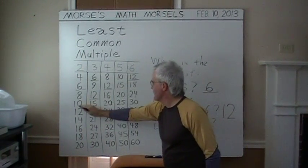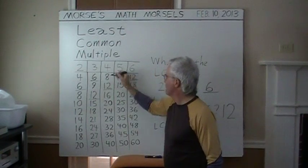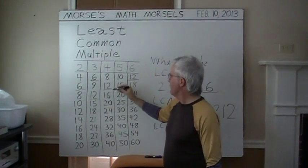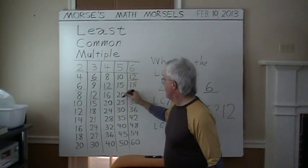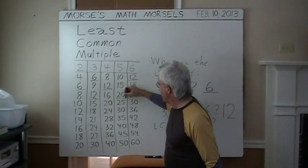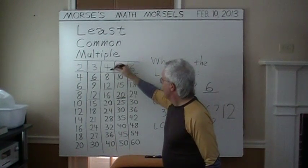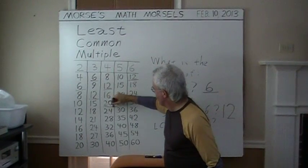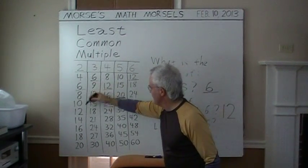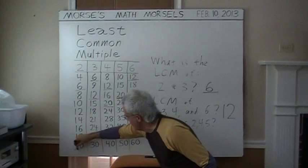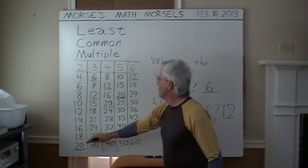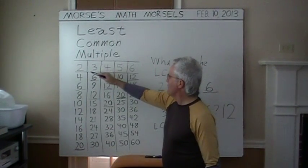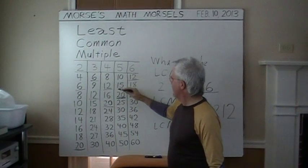How about ten? Well, ten is in the two times table, but not in the four times table. Let's try the next even multiple of five. Twenty. Is that in the four times table? Yes, there it is. And in the two times table? Yes, at the bottom on this chart. Twenty is the least common multiple of two, four, and five.